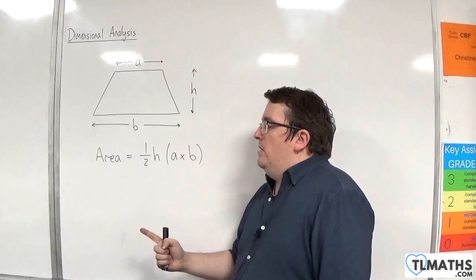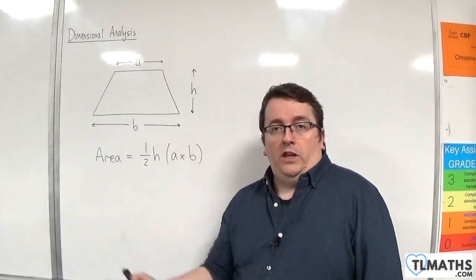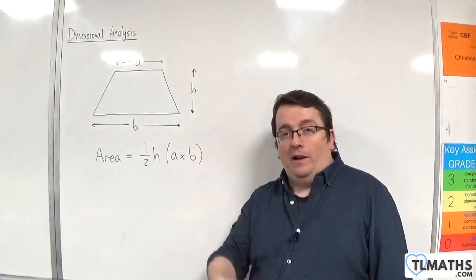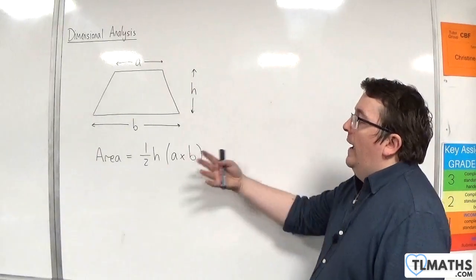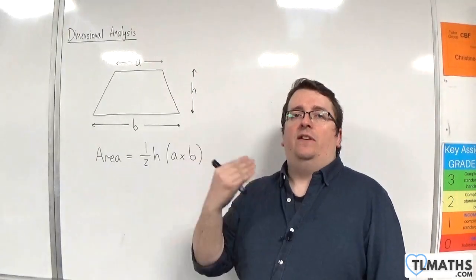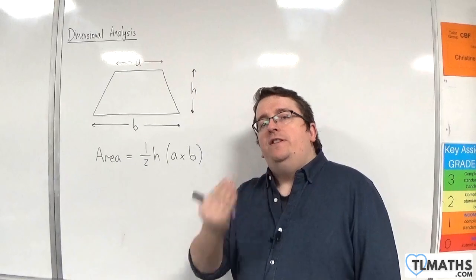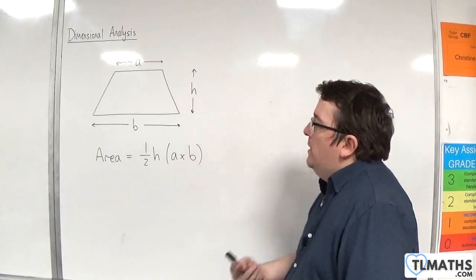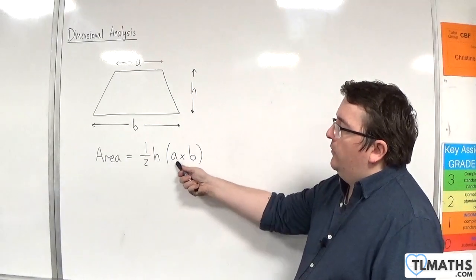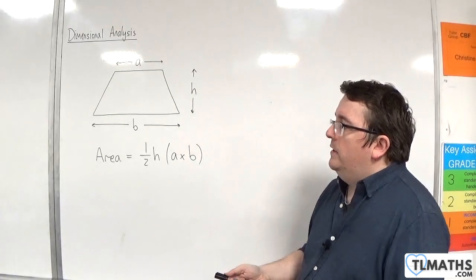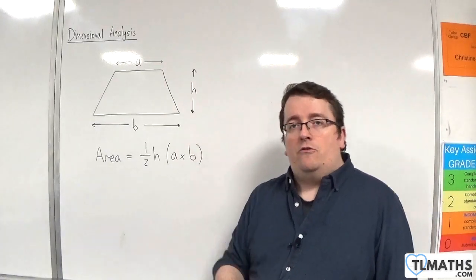And one reason why you might be thinking it's wrong is because you know what the formula is. You know that the formula is ½h(a+b), not ½hab. But it should also instinctively be wrong, even if you'd never seen the area of a trapezium formula before. Because what you're doing is you're multiplying three lengths together, and when you multiply three lengths together, you get a volume, not an area.